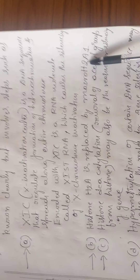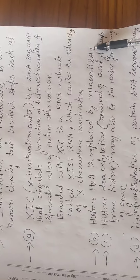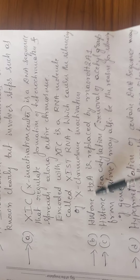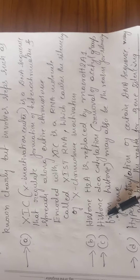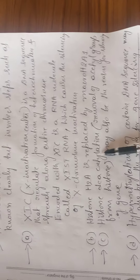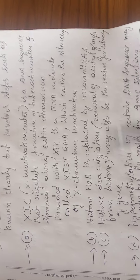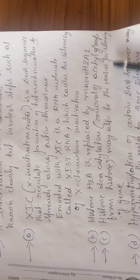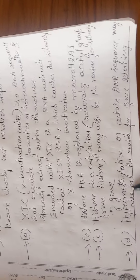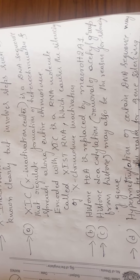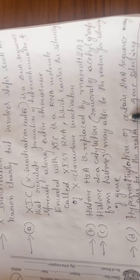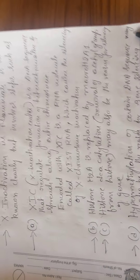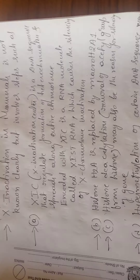Another reason is that histone H2A is replaced by macro H2A1. There is also histone deacetylation — the removal of the acetyl group from histones — which may also be a reason for silencing of the genes. The last reason is hypermethylation; increased methylation of DNA sequences may also be a reason for certain DNA sequences to undergo silencing. These are the different reasons for the inactivation of X chromosomes.